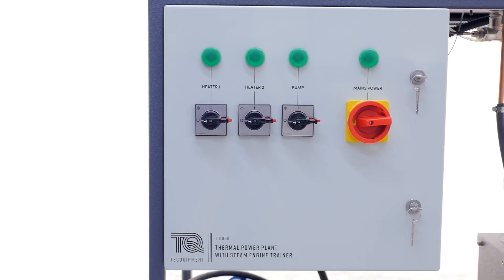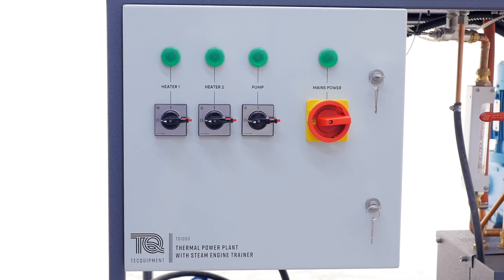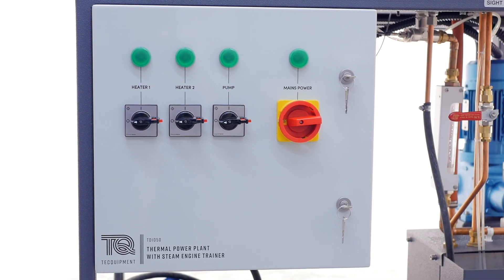To the front there is an electrical control cabinet that contains an isolator and individual control switches with indicator lights for two heater elements and the feed pump. The lights turn off to indicate when the boiler pressure is at peak operating pressure.